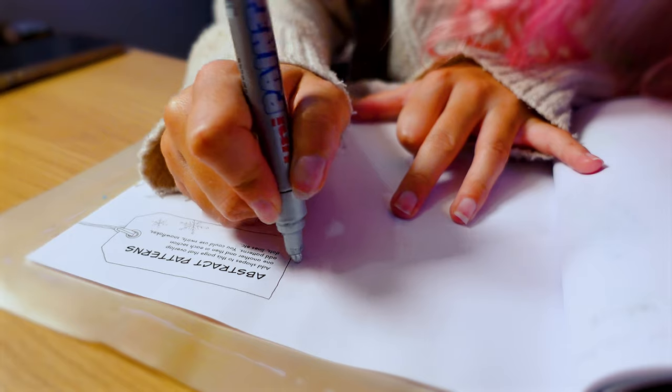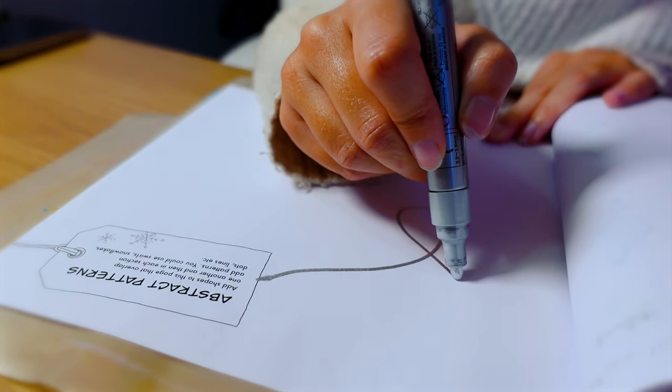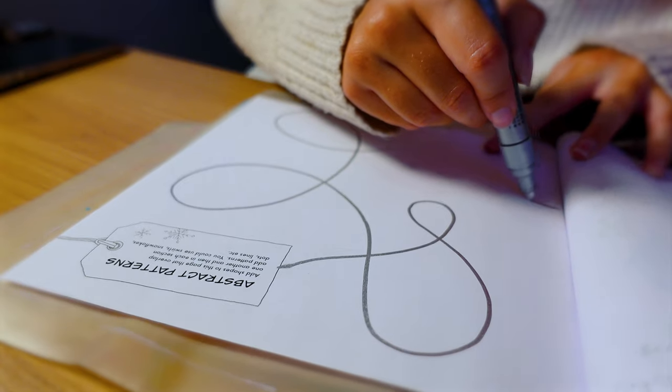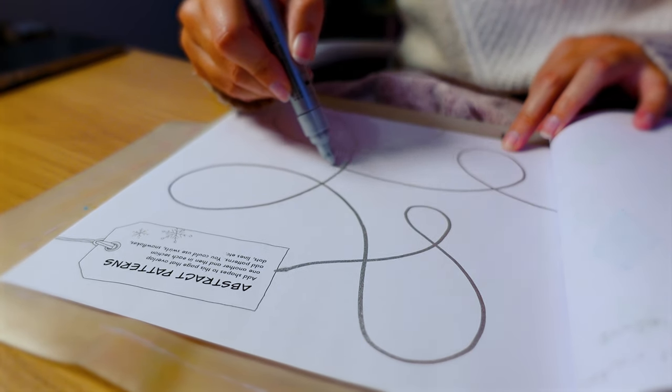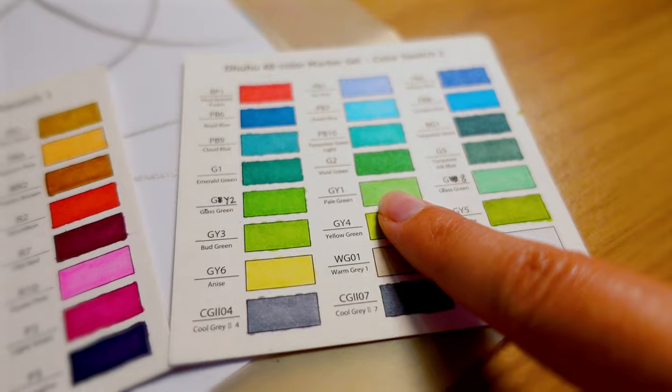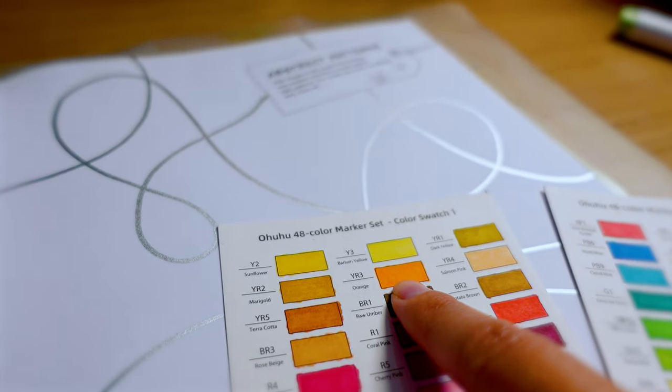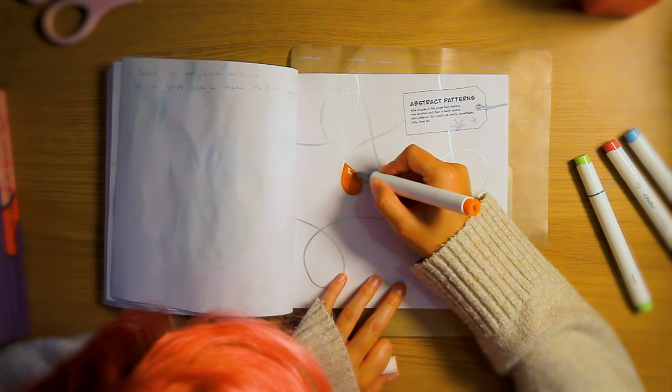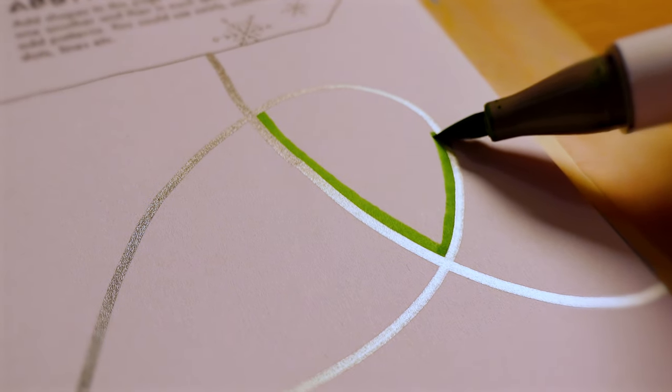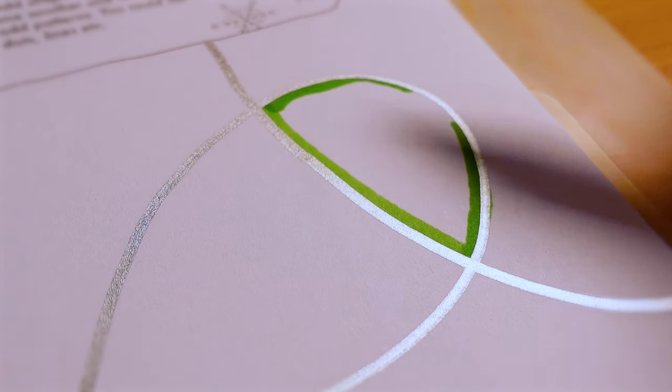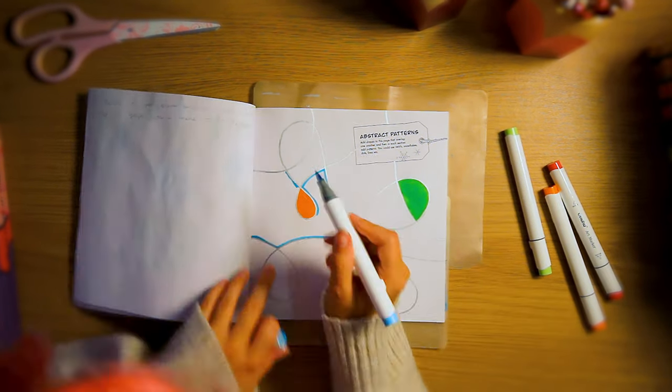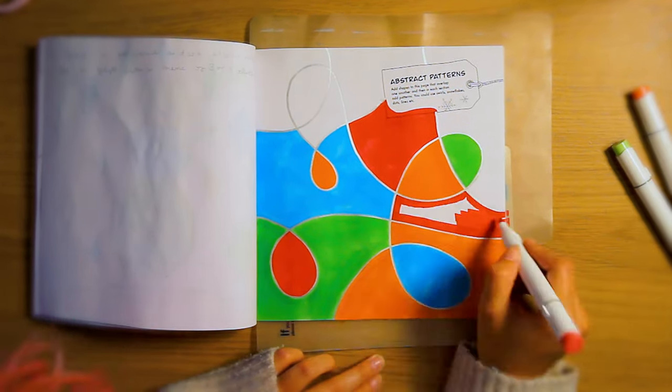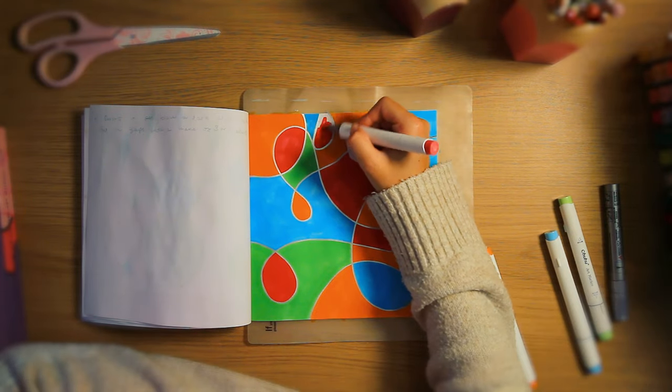Flipping over the page to work on the next prompt. Abstract patterns. Add shapes to this page that overlap one another and then in each section add patterns. You could use swirls, snowflakes, dots, lines. I mean this prompt is pretty self-explanatory and it could have looked very similar to the last one but I had a different idea in mind. Something that I used to do a lot as a child was draw random lines on a page and fill in the gaps. Honestly I don't know why but it bore me so much joy as a child so that's what I wanted to do for this prompt. But there was a discovery. I used the oil-based metallic markers for the lines and it turns out they actually form a little bit of a resistance with the alcohol markers. It picked up a tiny bit of glitter but honestly the perfect line. It was the perfect line. It didn't bleed at all and filling in the gaps was so easy because it formed a resistance.